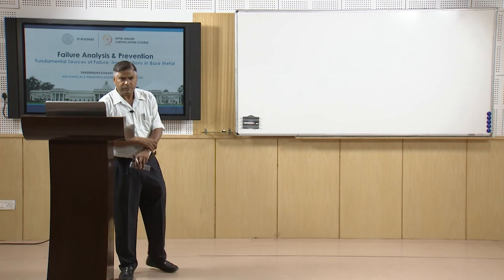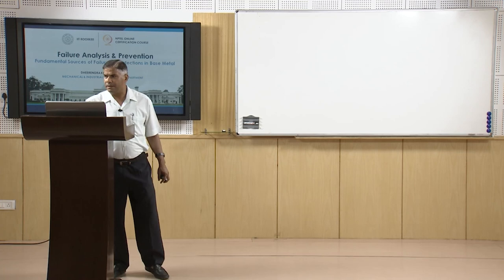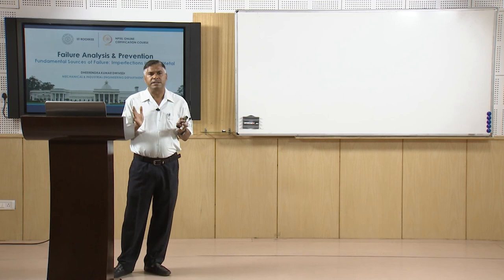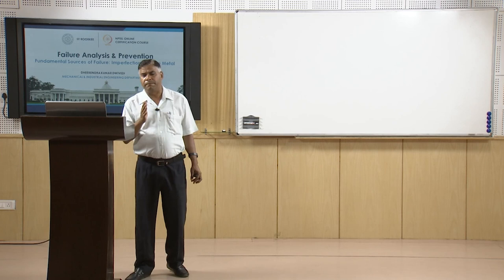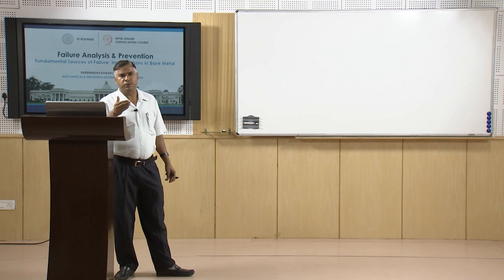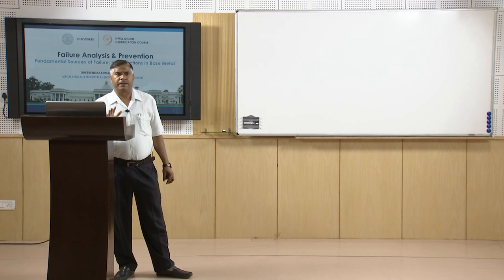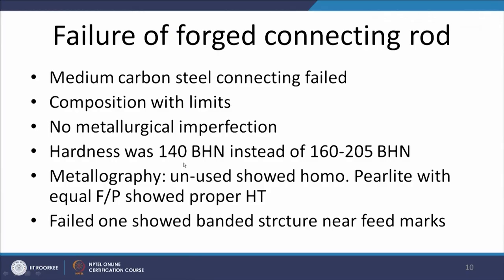There is one case study related to metallurgical heterogeneity and how failure is caused: the failure of a forged connecting rod. The connecting rod was made of medium carbon steel. When the failed rod's composition was analyzed using spectroscopy it was found within the specified limits. Microscopic studies showed no metallurgical imperfection such as segregation, but the hardness of the connecting rod was found to be 140 BHN instead of the recommended value of 160 to 205 BHN.